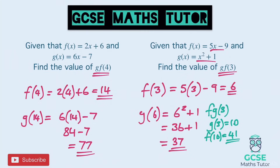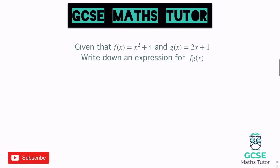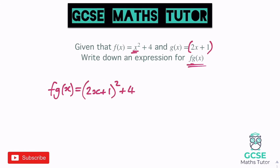Let's have a look at what happens when there's no numbers in them. This question says, given that f(x) is x squared plus 4 and g(x) is 2x plus 1, write down an expression for fgx. So we're not putting a number in this time — we need to find what f equals when you sub the function g in. There's a nice little trick: put a bracket around the whole g function and place it in the position of x in f. So we get the bracket 2x plus 1, all squared, plus 4. That is an expression for fgx, but normally we'd expand and tidy it up.